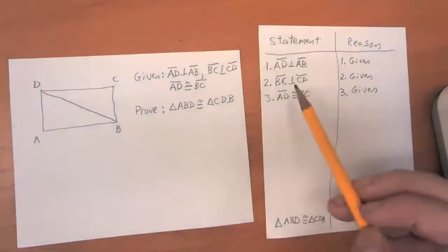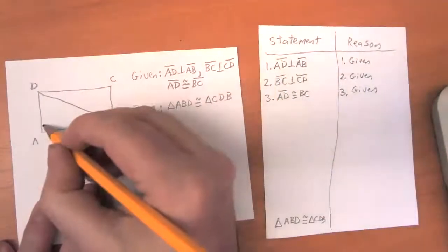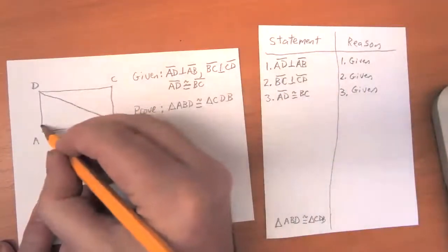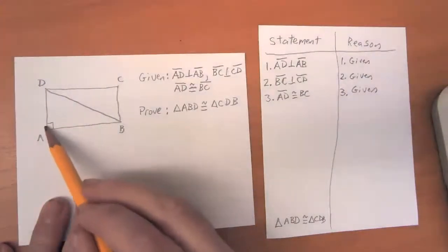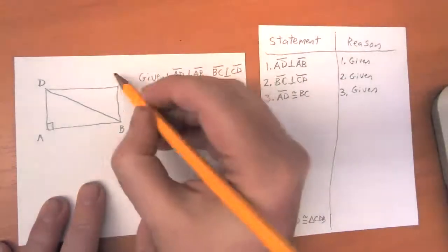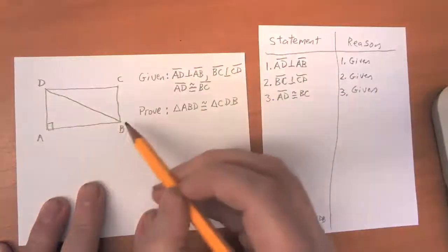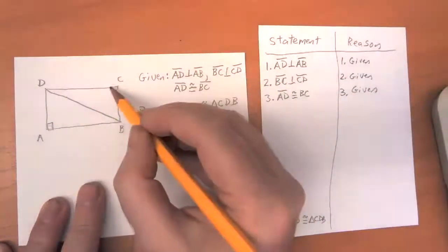When we've got these statements, let's mark up the diagram with it. So AD is perpendicular to AB - to talk about perpendicular I want to put a little bracket there so this looks like a square here. And I've got the same thing where BC intersects CD.